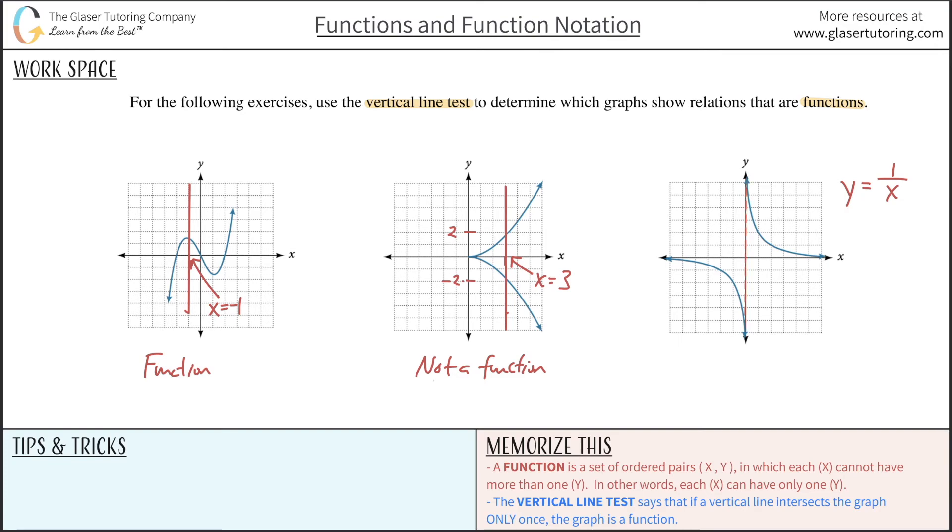Technically speaking, at most one intersection. We can still call the relation a function then. So in this particular case, since no matter where I draw my vertical line, there's only one point of intersection, I can then state that this is indeed a function.